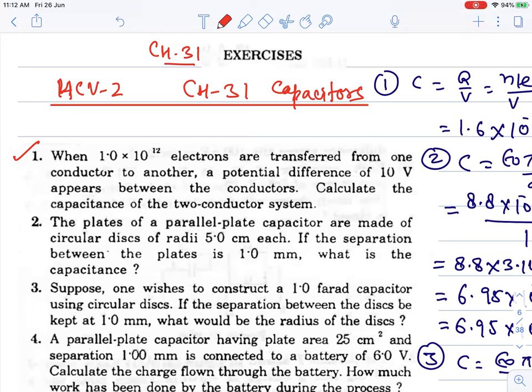We are going to see the first 10 questions of exercise Chapter 31, HCV-2, Capacitors. Let's see the first question. When 1.0 × 10^12 electrons are transferred from one conductor to another, a potential difference of 10 volts appears between the conductors. Calculate the capacitance of the two conductor system.